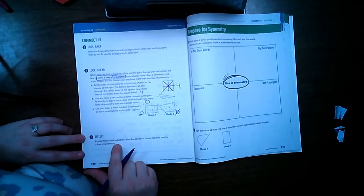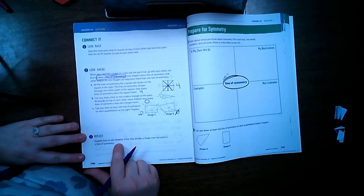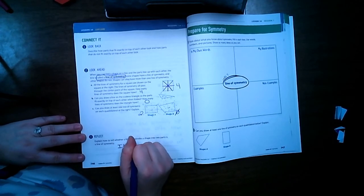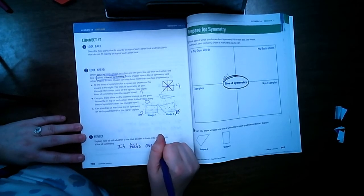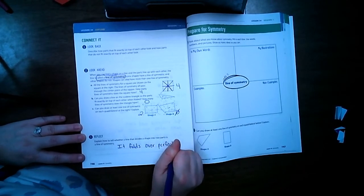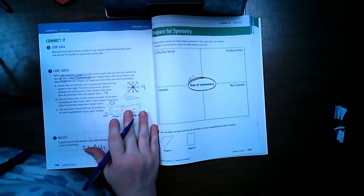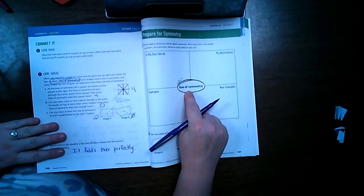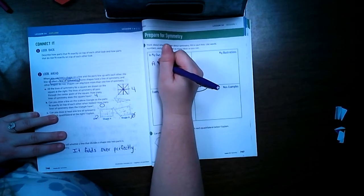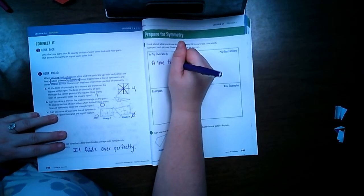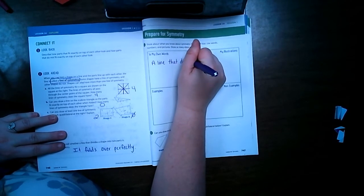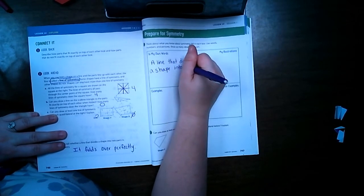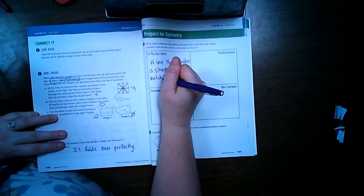This down here says explain how to tell whether a line that divides a shape into two parts is a line of symmetry. If it's a line of symmetry, it folds over perfectly. So on page 747, our vocabulary for this week is line of symmetry. And then in my own words, it's a line that divides a shape into two matching parts.